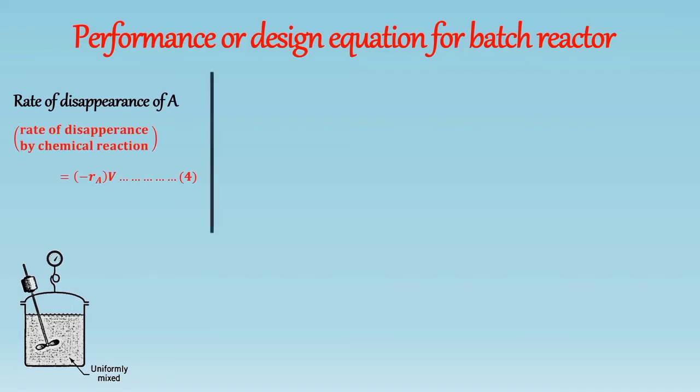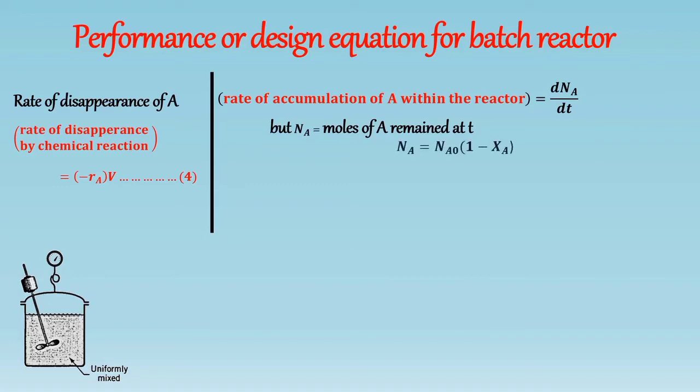Now let's calculate rate of accumulation of A within the reactor. So rate of accumulation of A within the reactor in moles per unit time is equal to dNA by dT. But as we know, NA is equal to moles of A remained at T, which can be written as NA is equal to NA0 into 1 minus XA. Hence the rate of accumulation can be written as... After solving it we get...